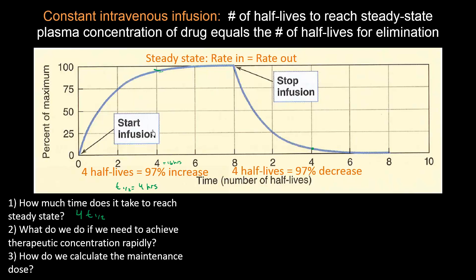What if this patient comes in and you're giving them a drug to stop, say, ventricular tachycardia or some major heart issue, and you need to get their plasma concentration up very quickly? Well, you don't want to wait 16 hours. So what you can do is give a loading dose.